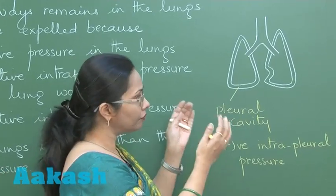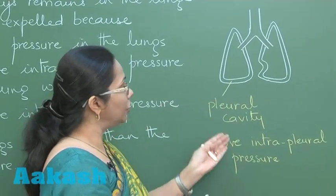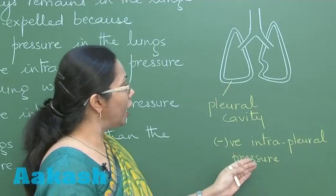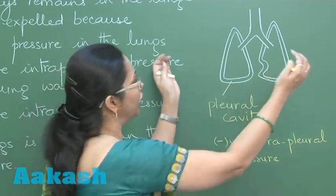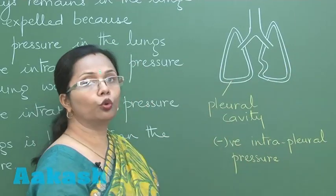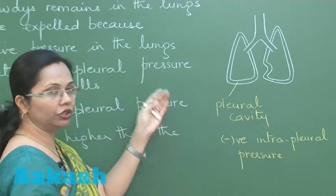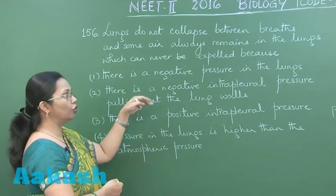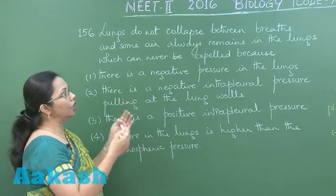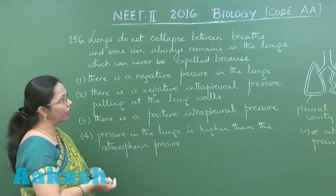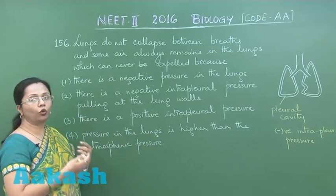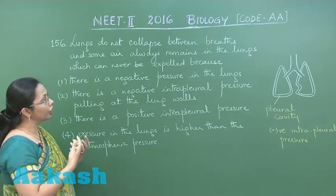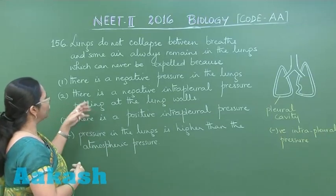When we exhale, the thoracic volume decreases and the intrapleural pressure becomes less negative, but it always remains negative. If this pressure became positive, it would cause the lungs to collapse. Now looking at the choices: there is negative pressure in the lungs, but once air has been expelled and the lungs have recoiled, that negative pressure is generated only when we are about to inspire and the diaphragm and intercostal muscles contract.